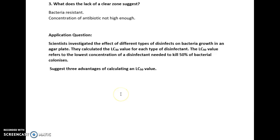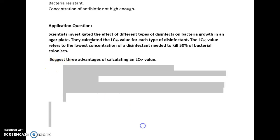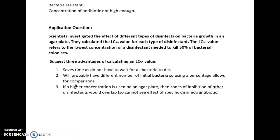An application question: Scientists investigated the effect of different types of disinfectants on bacterial growth in an agar plate and calculated the LC50 value for each — the lowest concentration needed to kill 50% of bacterial colonies. Suggest three advantages of calculating an LC50 value. First, it saves time — you don't have to wait for all the bacteria to die. Second, the number of initial bacteria may differ between plates, so using a percentage (50%) allows comparisons to be drawn. Third, if high concentrations were used, the zones of inhibition of different disinfectants would overlap, meaning you cannot see the effect of a specific disinfectant or antibiotic.